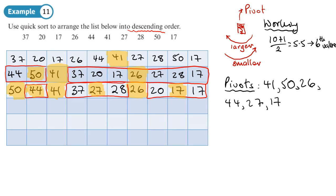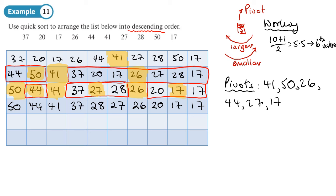The 44 just pivots around itself. For the 27 sub-list, 28 is bigger than 27 so it pivots over to the left. The 37 remains on the left side. Then 28 moves across, we have 26 in place, and no pivoting is needed around 17 and 20. Highlighting all pivots used so far: 27, 26, and 17. That leaves sub-lists: 27, 28 and 20, 17.